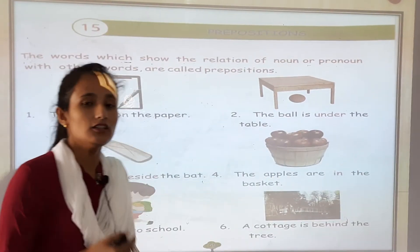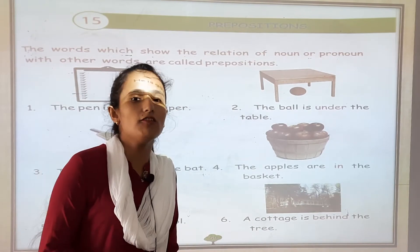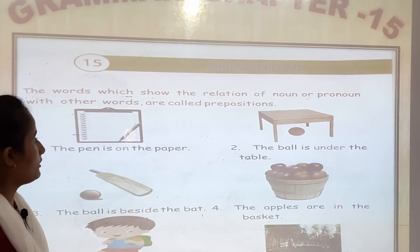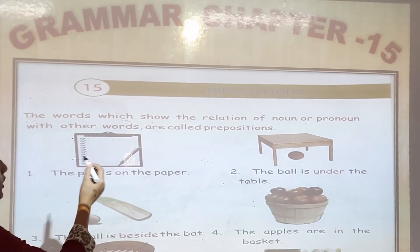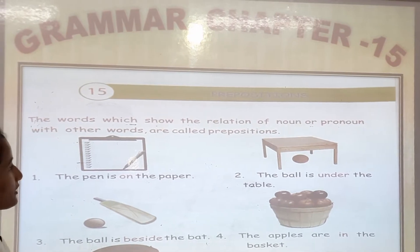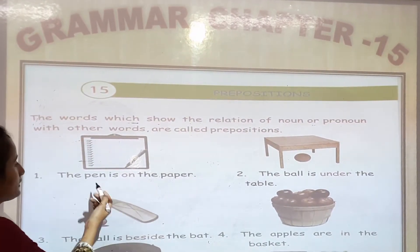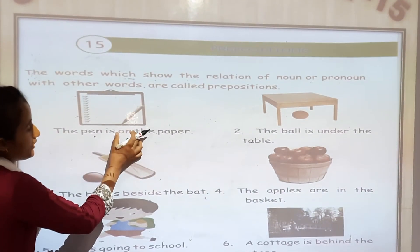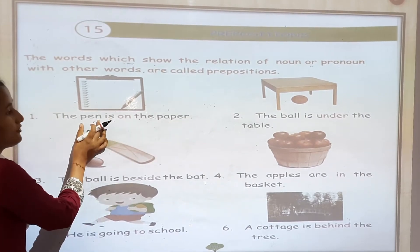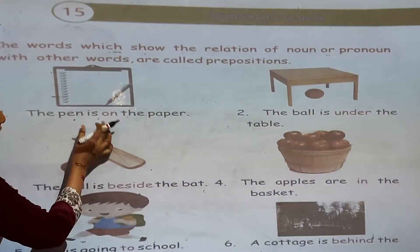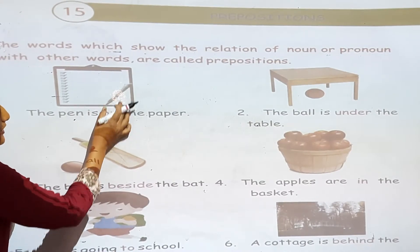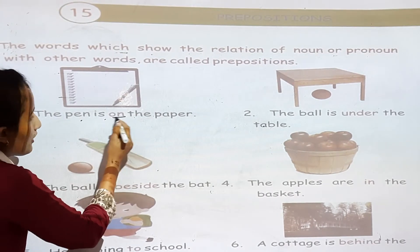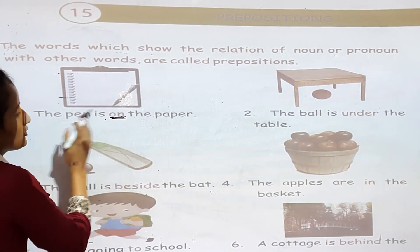So what is a preposition? The word which shows the relations of a noun or a pronoun with other words is called a preposition. For example, the pen is on the paper. So pen and paper are different things, but the word 'on' relates them to each other — that's why 'on' is a preposition.